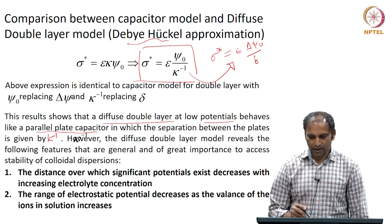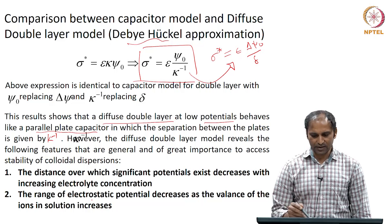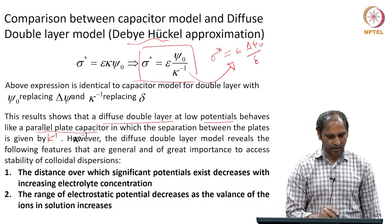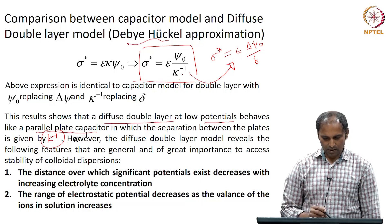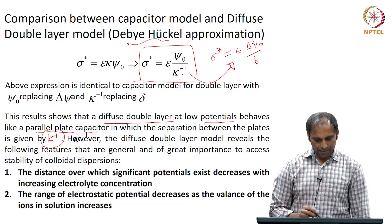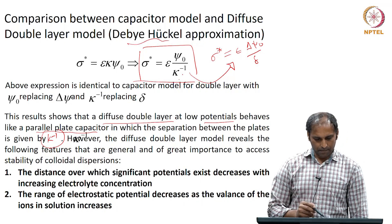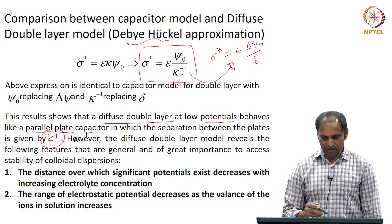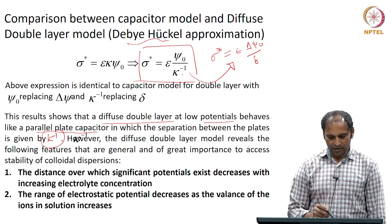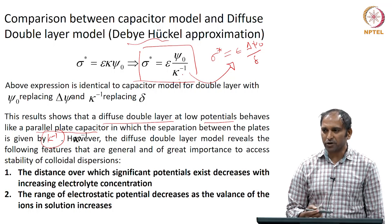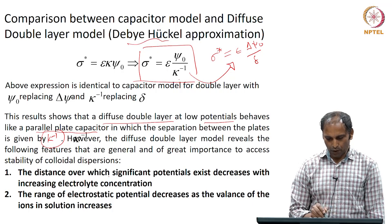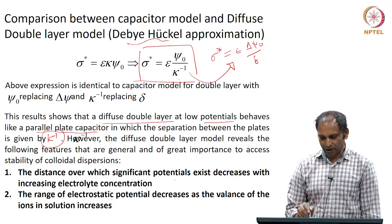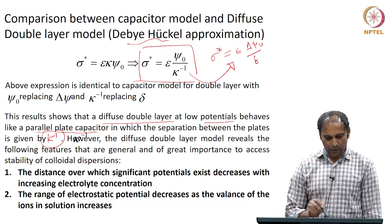What you can infer from these results is that the diffuse double layer at low potential behaves like a capacitor model. However, the separation distance δ is replaced by κ⁻¹, that is, instead of δ you have kappa inverse. This model captures some really important features.